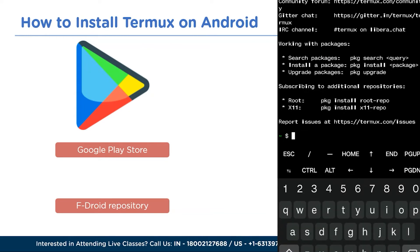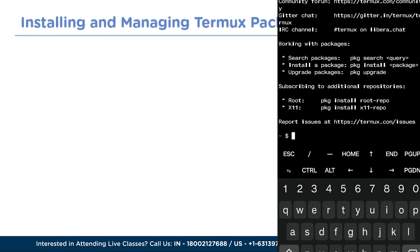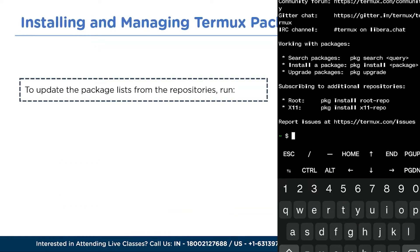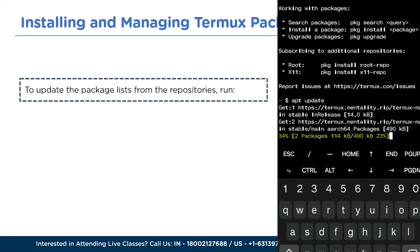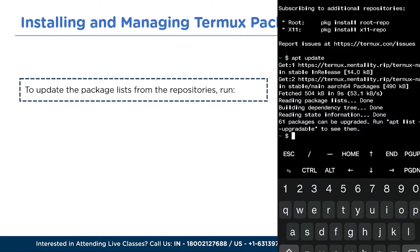Once downloaded, open Termux to see how it looks after installation. The first command to run is to update the package list from the repositories using the command 'apt update'. After pressing enter, you can see it connecting and updating all packages from the repositories.